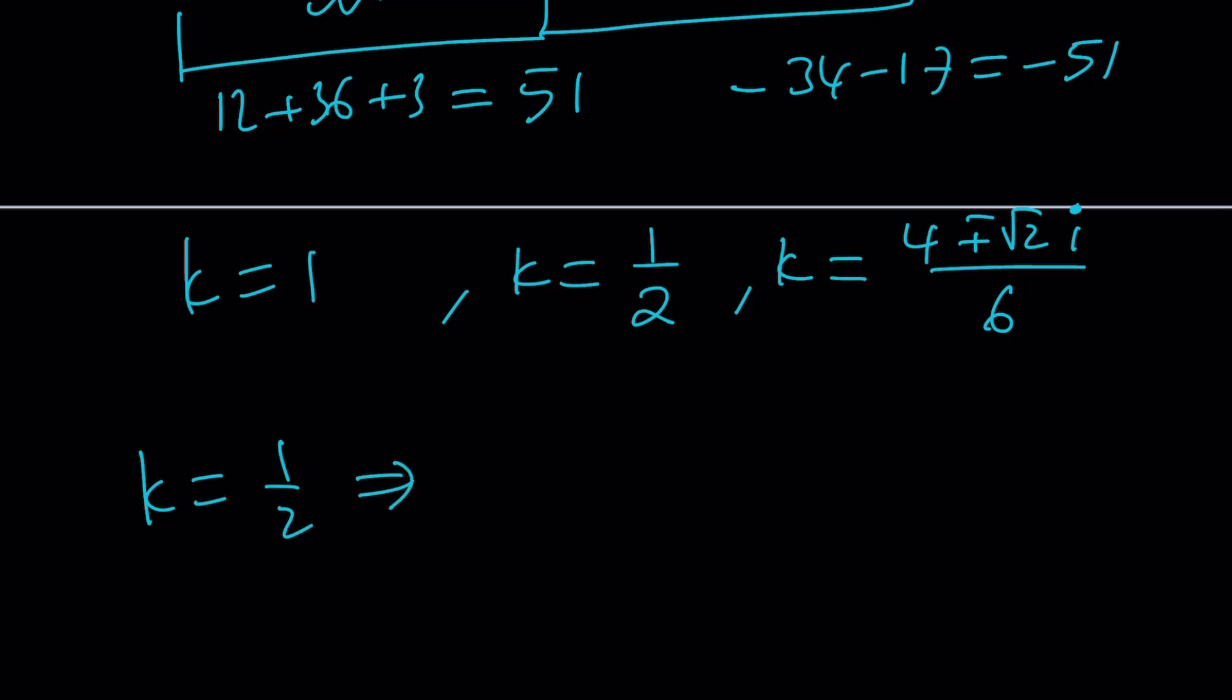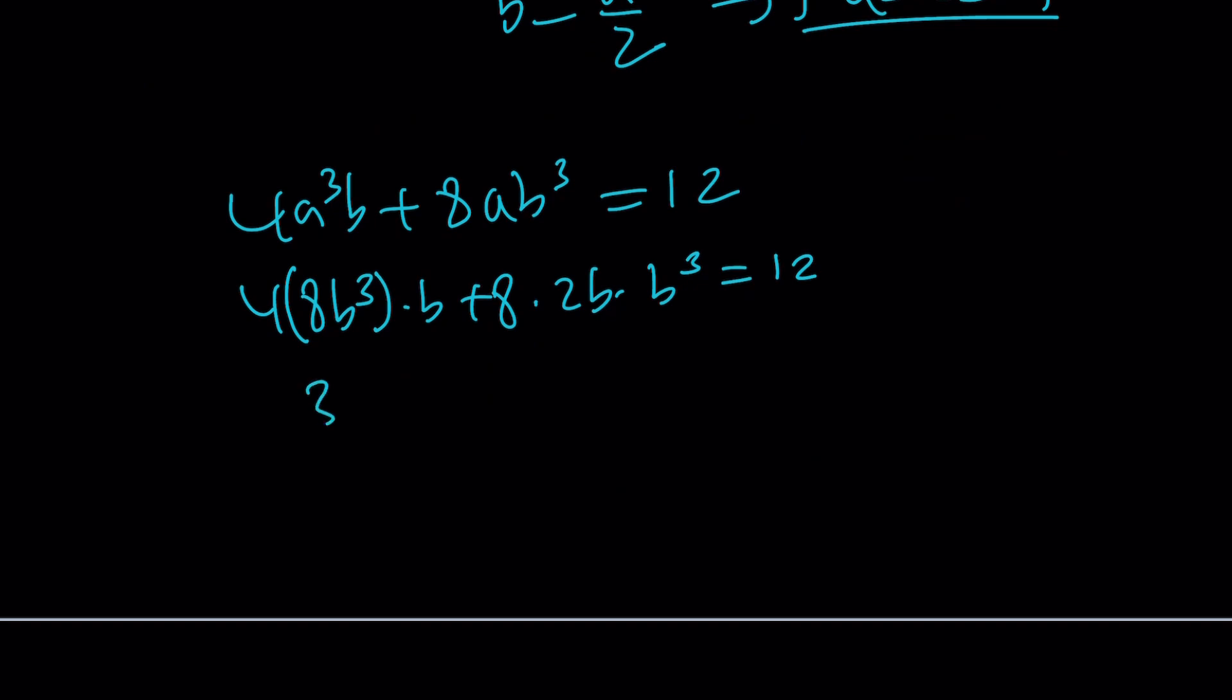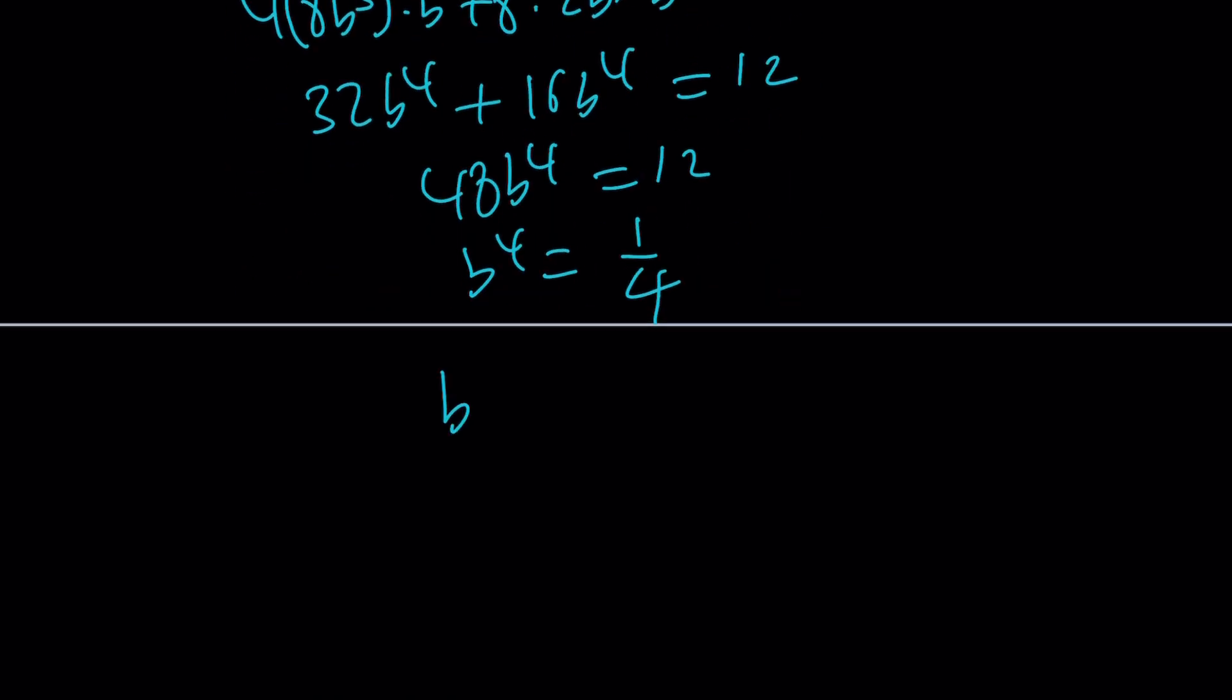We said that b is equal to ak, so from here, b is going to be a over 2. Or we could write this as a equals 2b. So you could replace a with 2b in one of these equations. The second equation seems simpler: 4a cubed b plus 8ab cubed equals 12. If you replace a with 2b, you're going to get 4 times 8b cubed times b plus 8 times 2b times b cubed is equal to 12. From here, we get 32b to the 4th plus 16b to the 4th equals 12. That's going to give me 48b to the 4th equals 12, and b to the 4th equals 1 fourth.